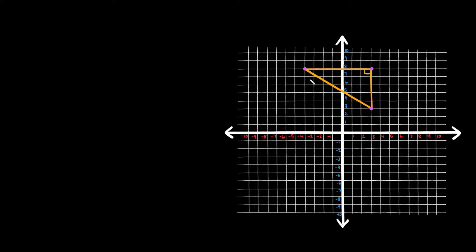Alright, so first of all we have a triangle right here. The area of a triangle — of any triangle — is equal to one half the base times the height. Now when your shapes are lined up with the grid like this, it's a little bit easier to figure it out.